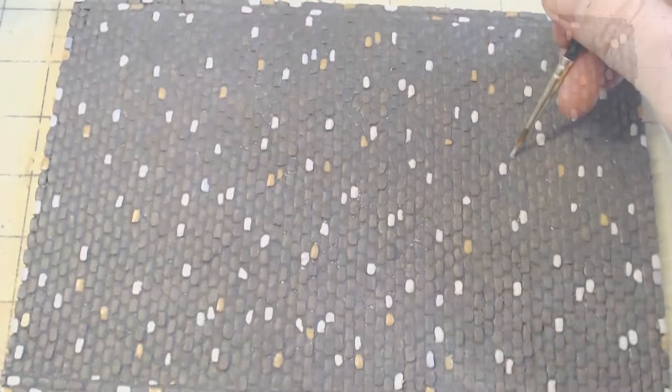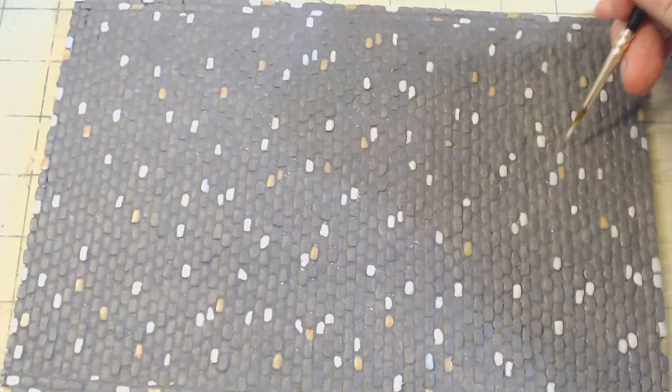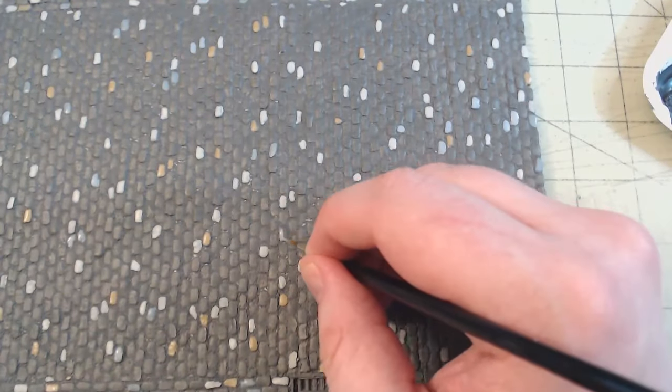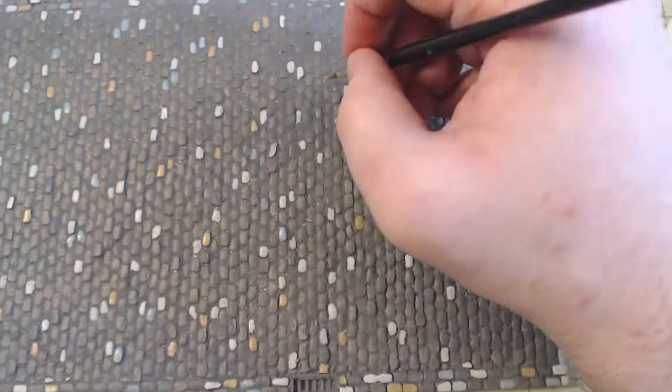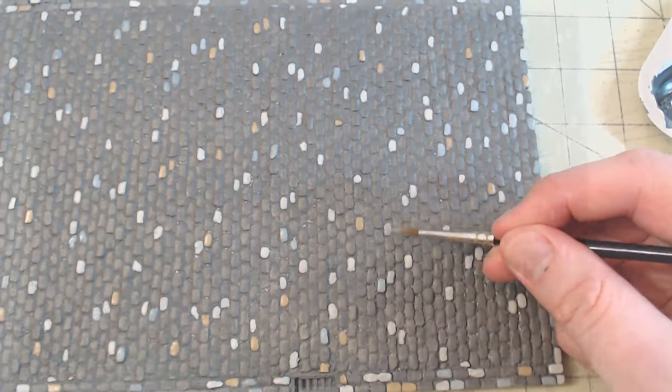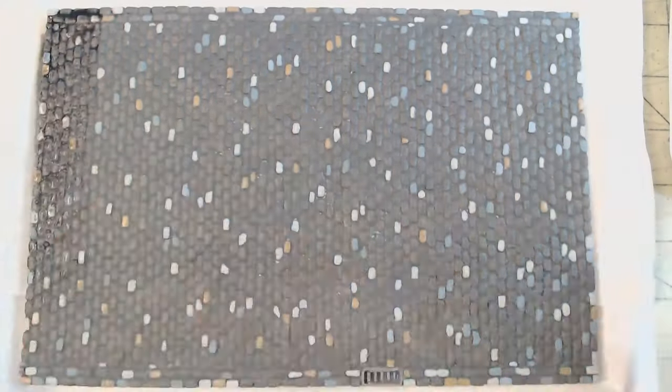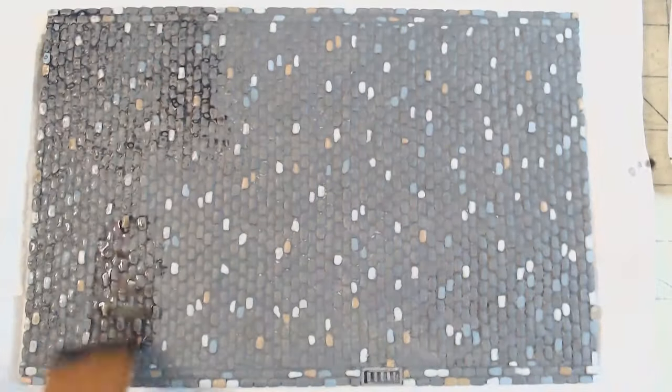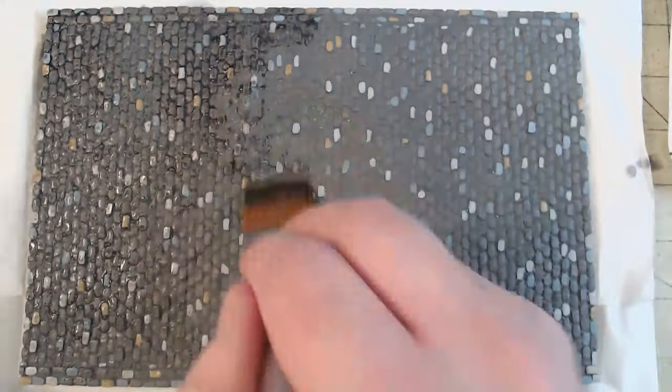Then using various grays as well as some browns mixed in with some grays, I picked out random stones to give the road some tonal variation. Once happy with how the stones were looking, the entire base received a coat of a wash, this time made from nato black.